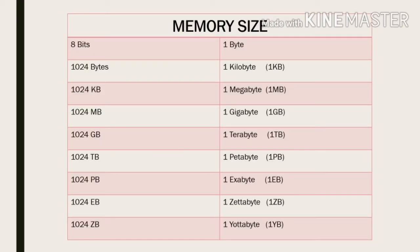Now let's know about different memory sizes. Just as we have different measuring units for different things, we have some units in computers also to measure the memory. The smallest memory unit is bit. 8 bits make up 1 byte, occupied by 1 character. As you go for higher memory spaces, the unit changes: 1024 bytes equals 1 kilobyte, 1024 kilobytes equals 1 megabyte, 1024 megabytes equals 1 gigabyte, 1024 gigabytes equals 1 terabyte, 1024 terabytes equals 1 petabyte, 1024 petabytes equals 1 exabyte, 1024 exabytes equals 1 zettabyte, and 1024 zettabytes equals 1 yottabyte.